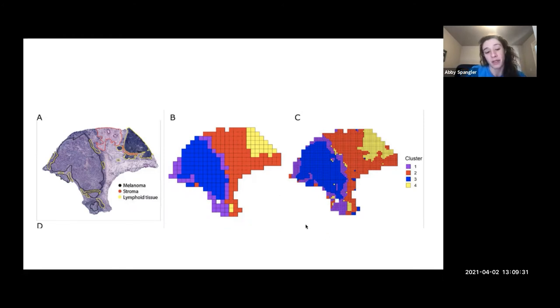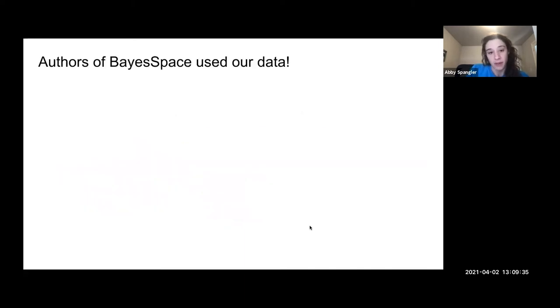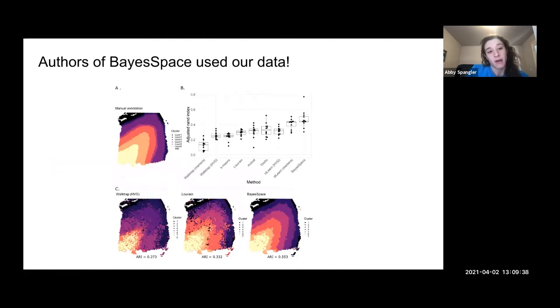And this is a melanoma tumor from the original BaySpace paper. And so it was kind of exciting because the authors of BaySpace used our pilot data of the DLPFC. Here's that manual annotation that I showed you before, and they did clustering with BaySpace and measured with the same index, the adjusted Rand index and showed that the clustering performed better than other methods of clustering.